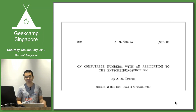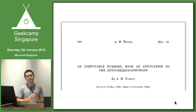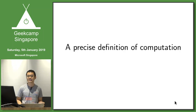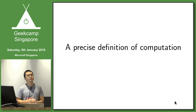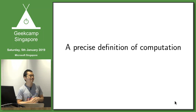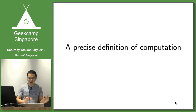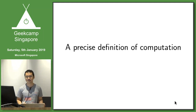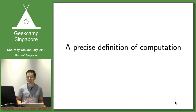He was trying to solve a problem in mathematics, and to solve it he needed two components. First, he needed to define what is meant by computation. Second, he needed to find something which computers could not do. And along the way, he would invent the concept of software.